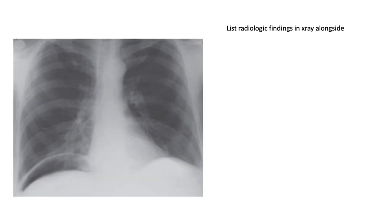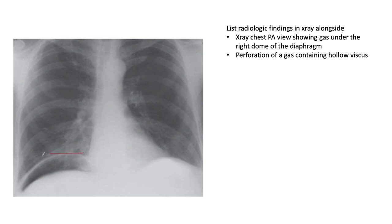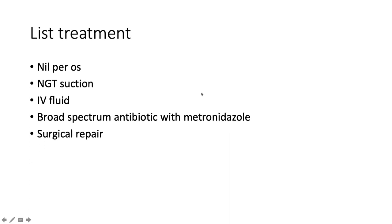Air is visible under the right hemidiaphragm, which is not normal — it speaks to perforation of a gas-containing hollow viscus. Common causes are perforation of a chronic duodenal ulcer, perforation of the ileum secondary to TB, typhoid, or Crohn's disease.